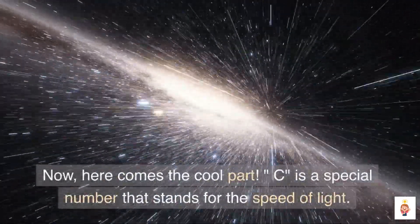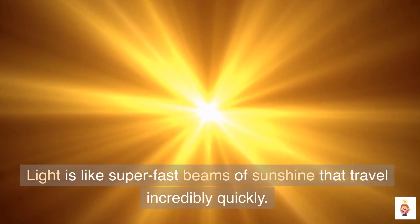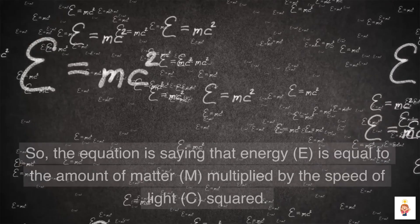Now, here comes the cool part. C is a special number that stands for the speed of light. Light is like super fast beams of sunshine that travel incredibly quickly.